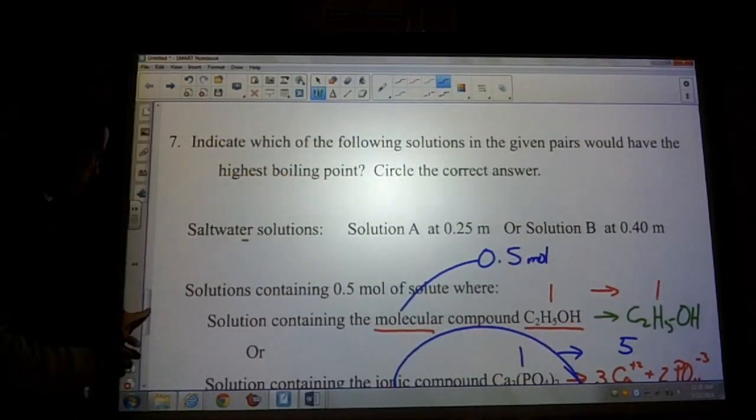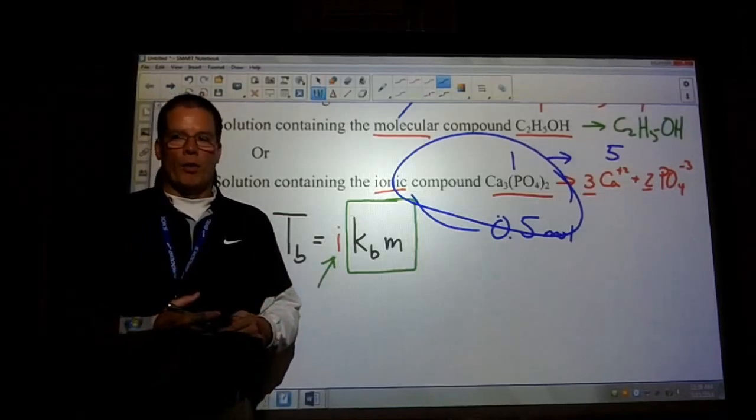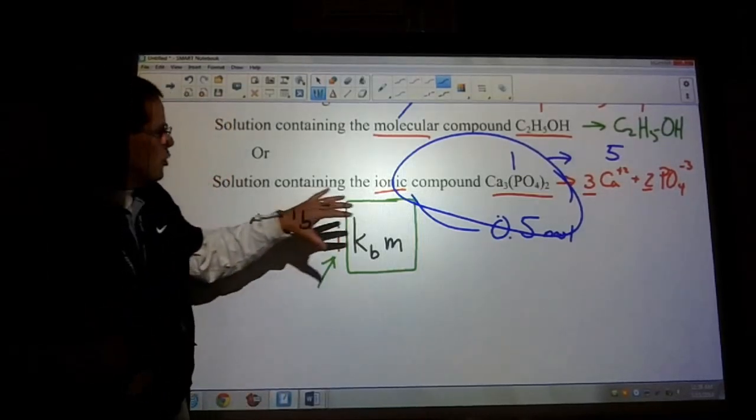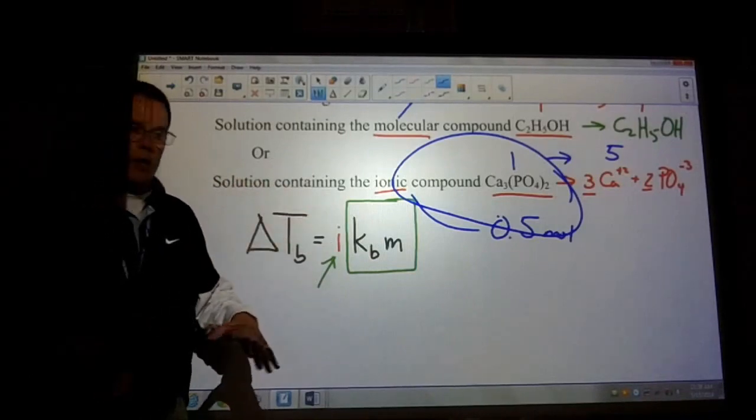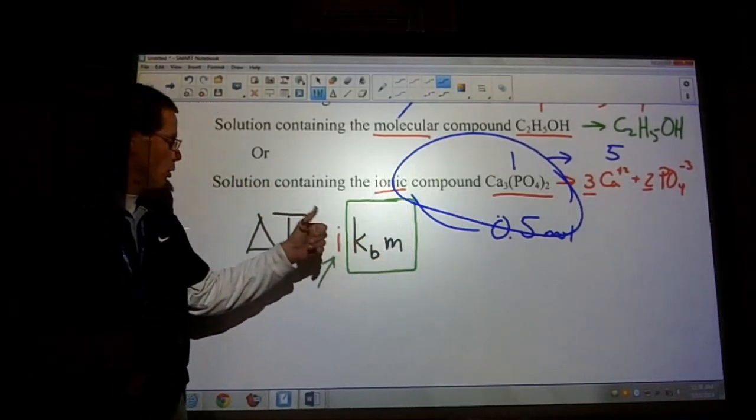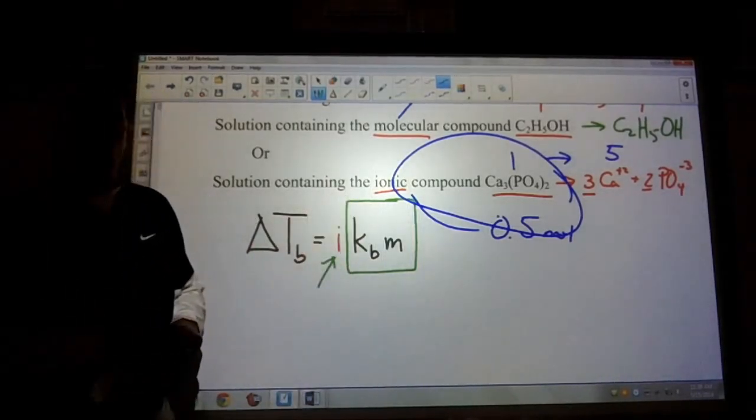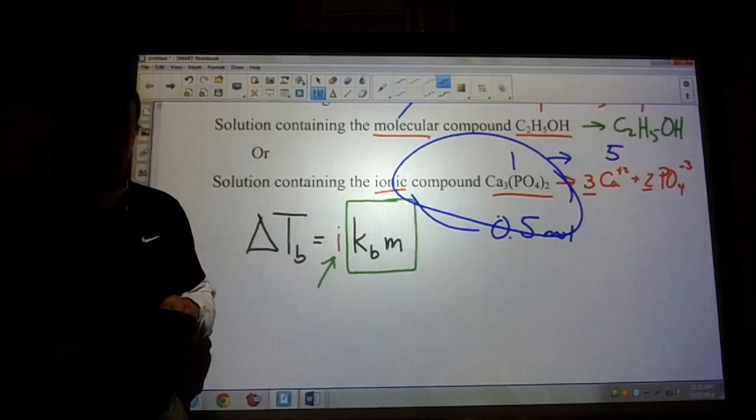When looking or confronted with a question like this, it's a concept question. Know which things don't change. Well, obviously the constant's never going to change, but the molality could change or the i could change. That is going to determine the bigger change in the boiling point or the freezing point.